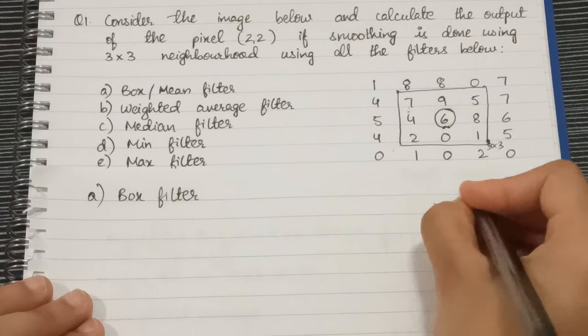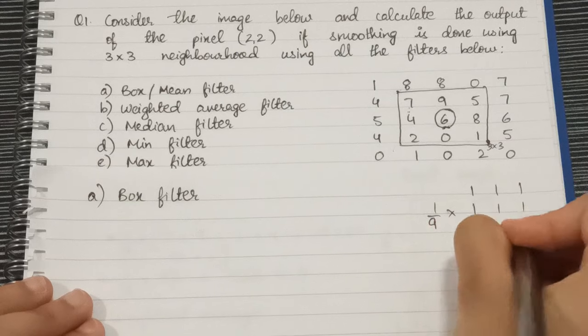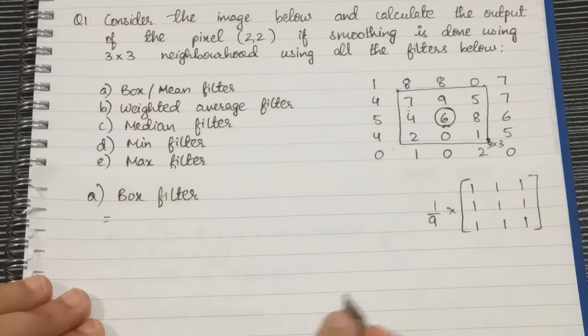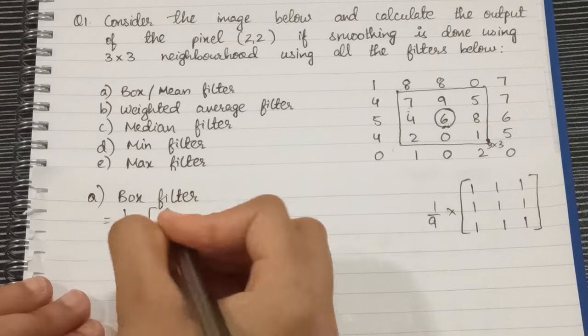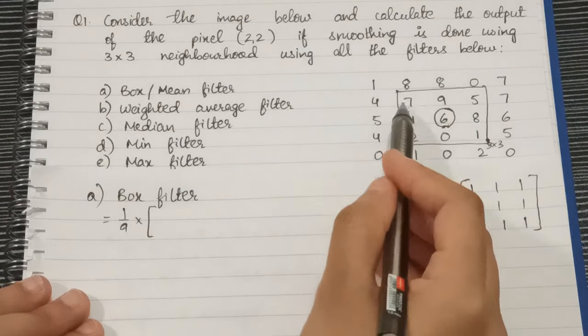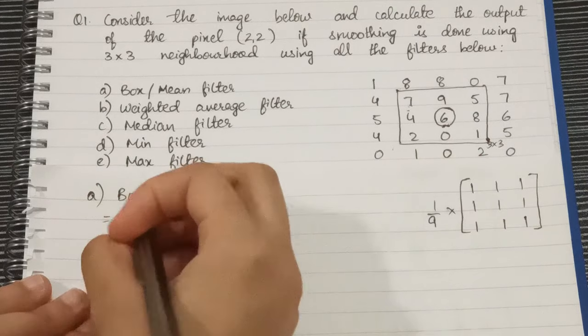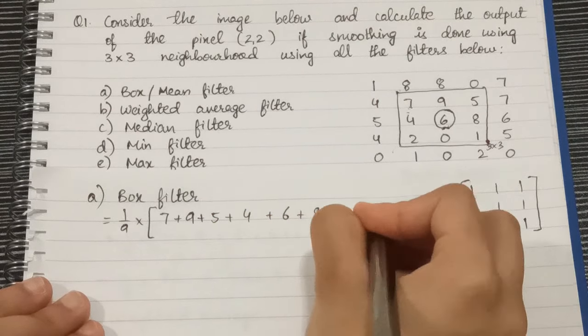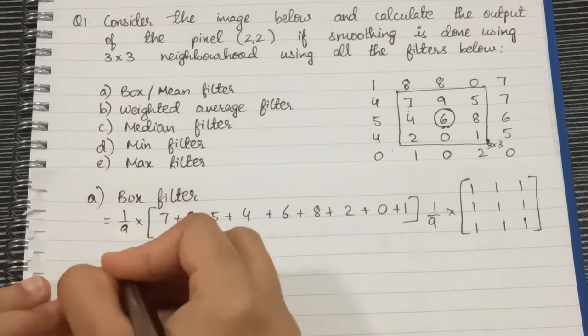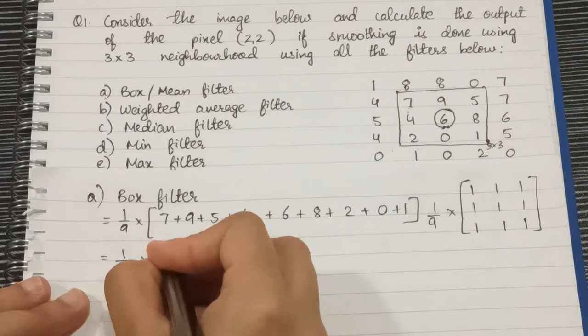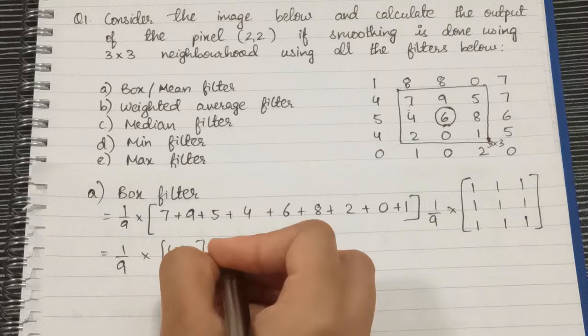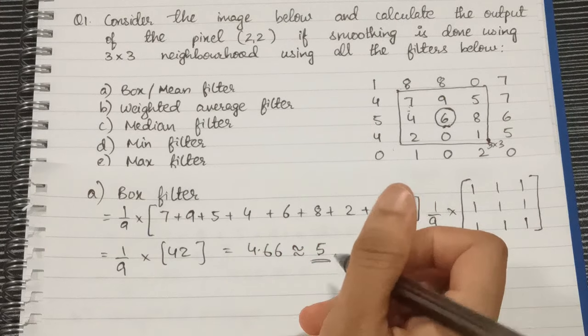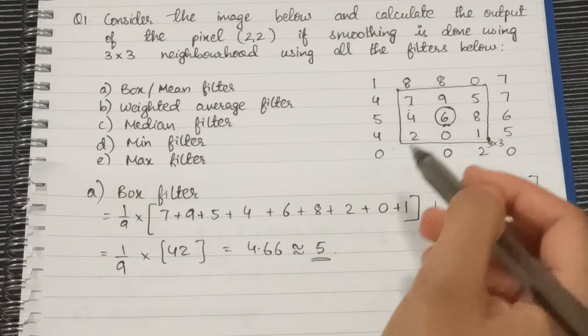The mask for box filter is 1 by 9 into 1 in all the pixel values. For our output pixel we'll take this 1 by 9, and then since it's 1 in all places we'll just take the original pixel values and the sum of it. So it will be 7 plus 9 plus 5 plus 4 plus 6 plus 8 plus 2 plus 0 plus 1. This will get the value as 1 by 9 into 42, or it will be 4.66 which is almost equal to 5. So our output image would be this image but instead of the 6 we'll have the value 5.